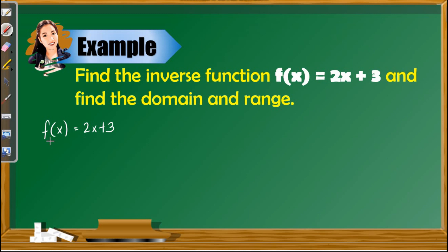In a linear function, the graph is a diagonal line that extends infinitely in both directions. So here, the domain and range of this function are both the set of real numbers. We have the set of x such that x is an element of the real numbers, and for y, or the range, we have y such that y is an element of the real numbers.